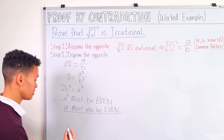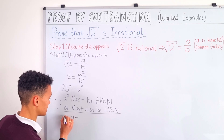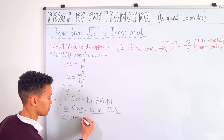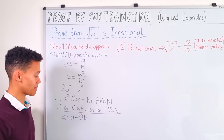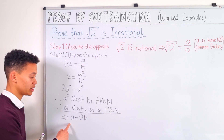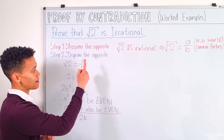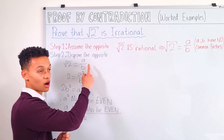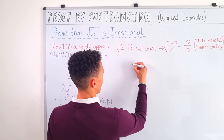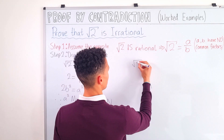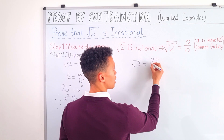If something is even then it can be expressed as two times an integer. So we say that a can be expressed as 2k — it doesn't really matter what letter we use. Now we know a equals 2k, so if we substitute that back into our original assumption we have root 2 equals 2k over b.